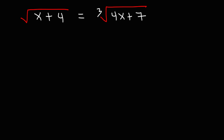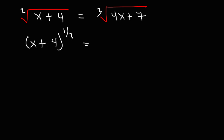What's our first step here? What we could do is convert the radicals into exponential fractions. The square root of x plus 4, with index number of 2, is equal to x plus 4 raised to the 1/2. The cube root of 4x plus 7 is equal to 4x plus 7 raised to the 1/3.